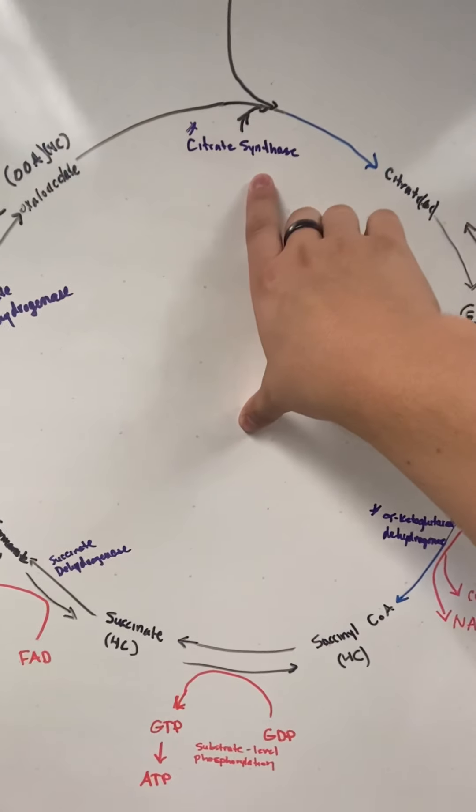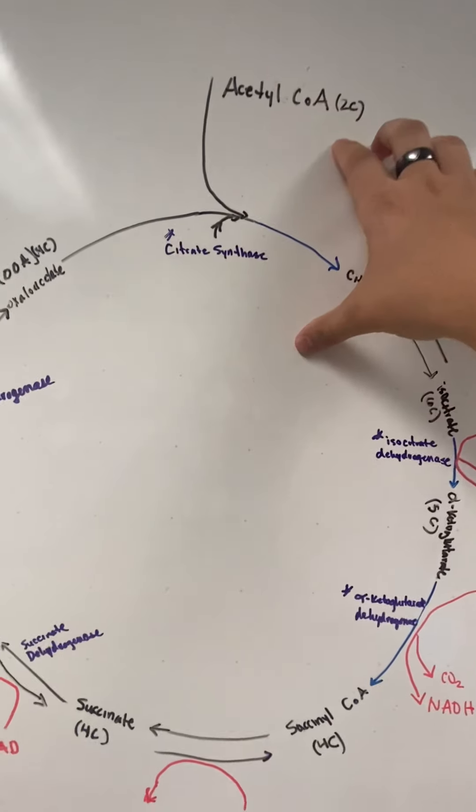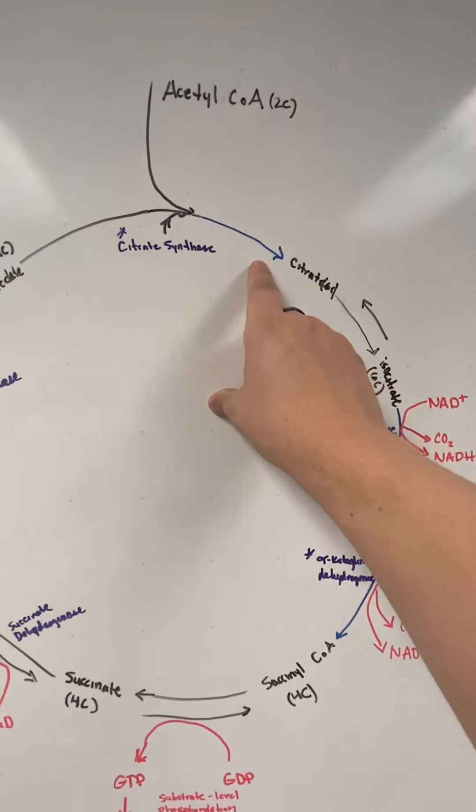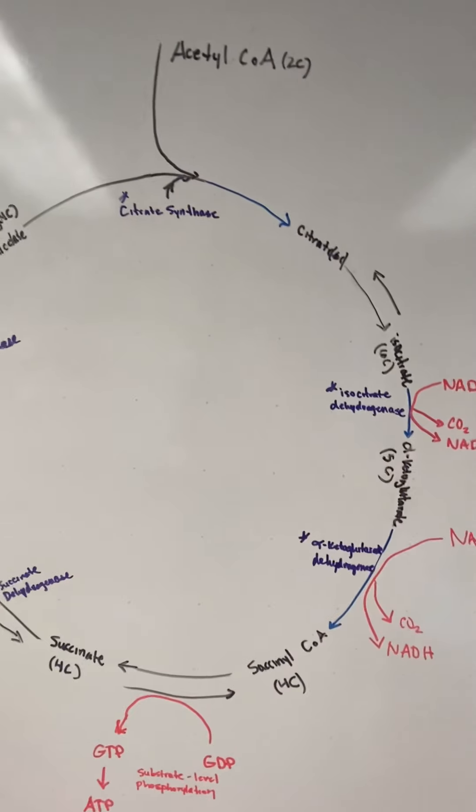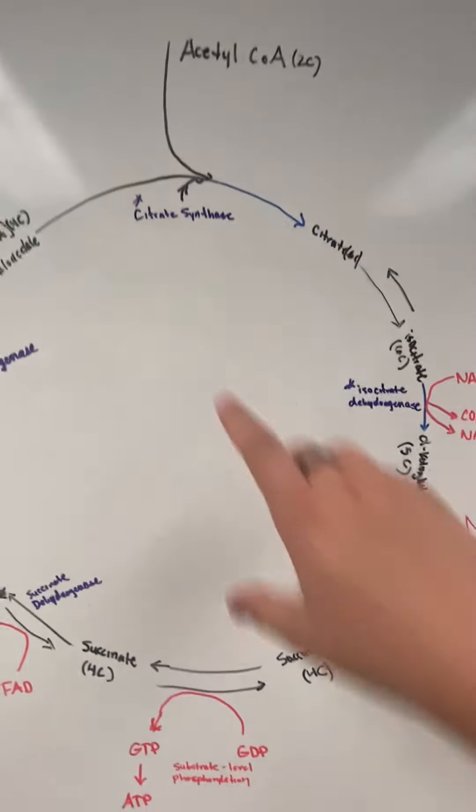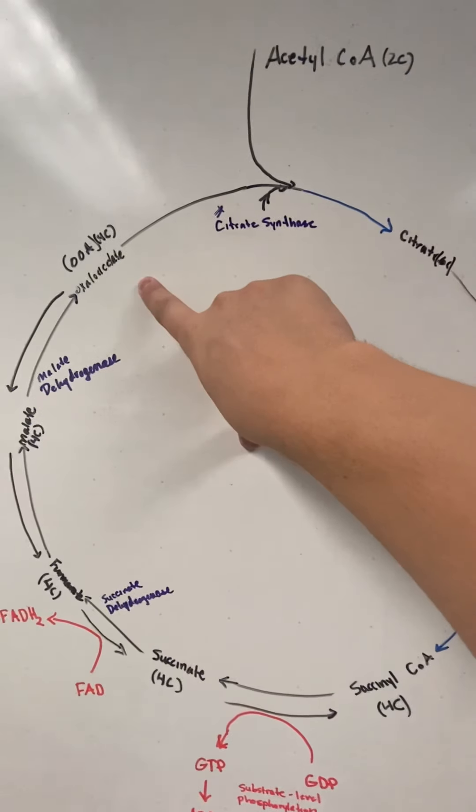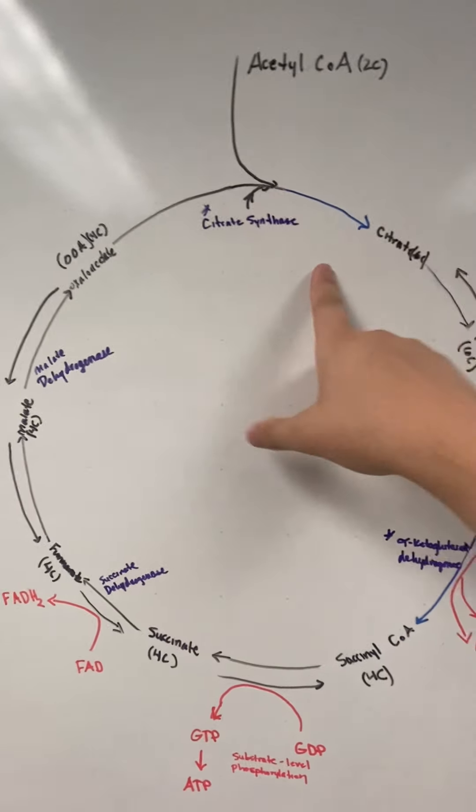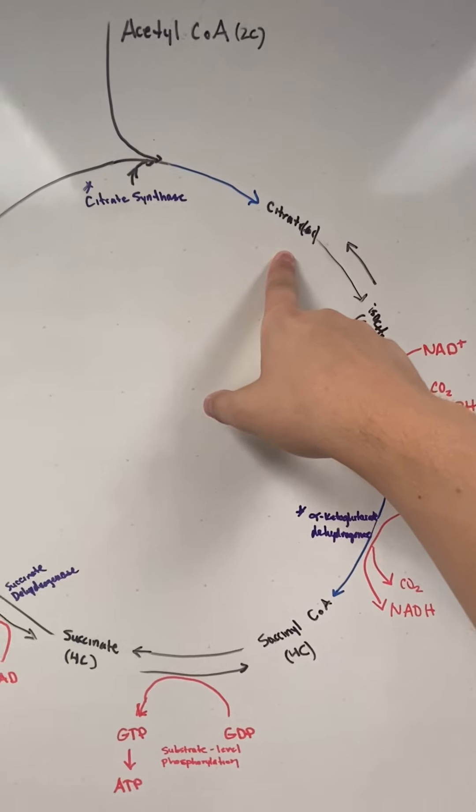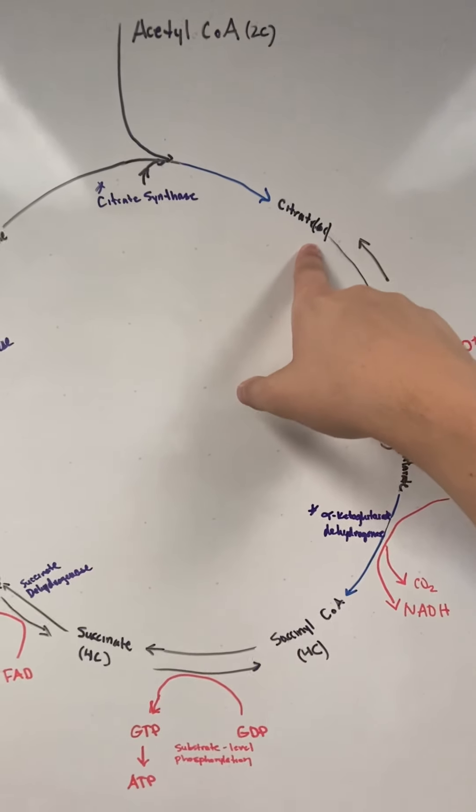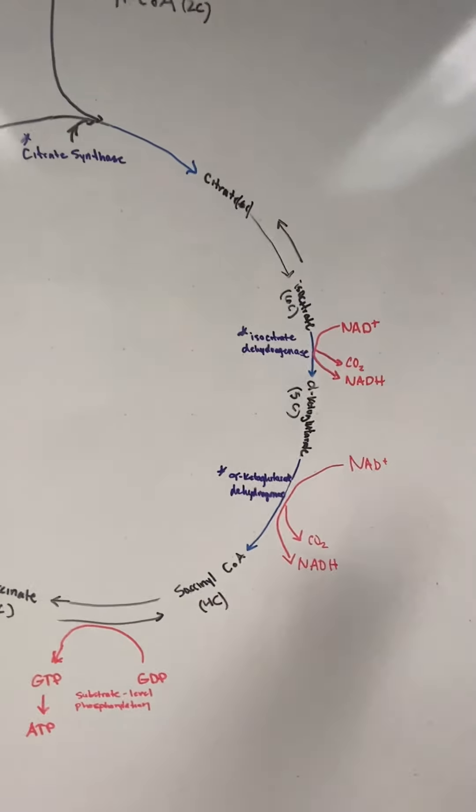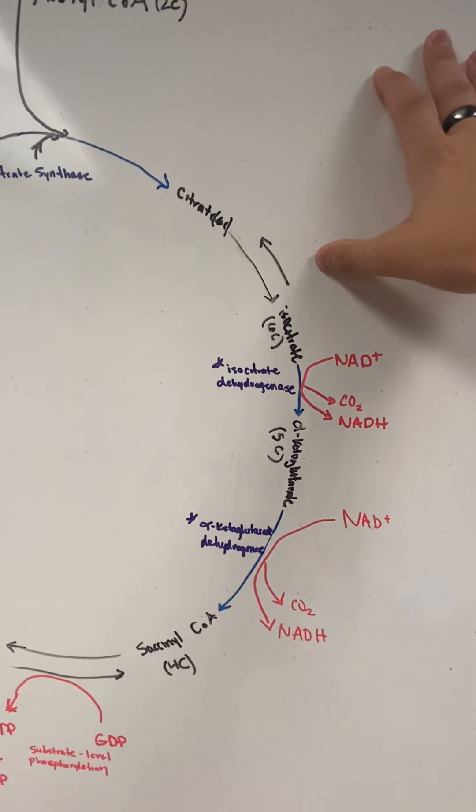We're going to add citrate synthase and acetyl-CoA, this step right here in blue. Anything in blue is irreversible. We're going to go from a four-carbon unit, add two, and end up at citrate, which is a six-carbon unit. From there, we're going to have a reversible reaction, so we can go either way.